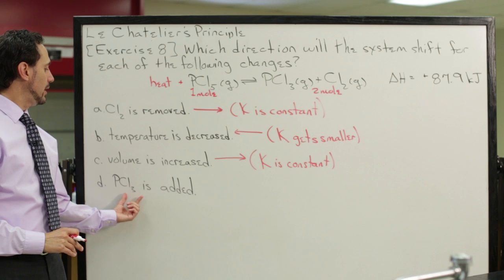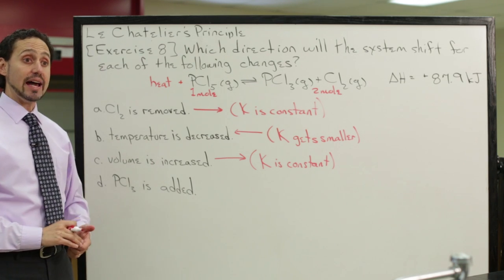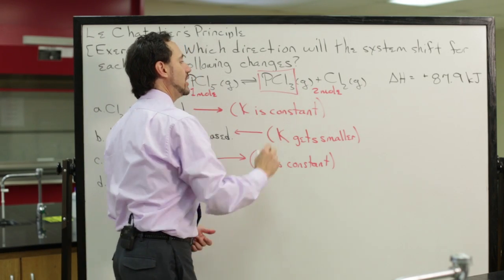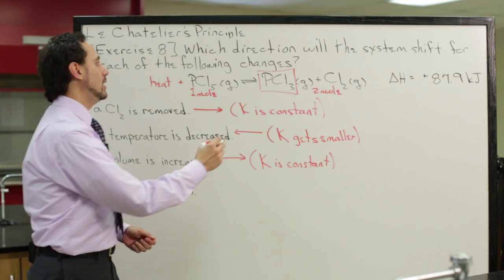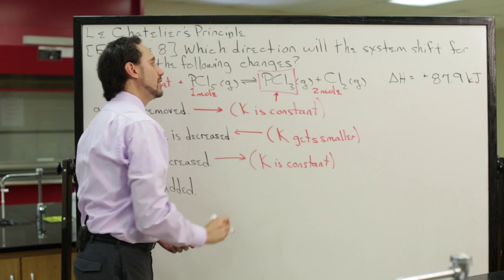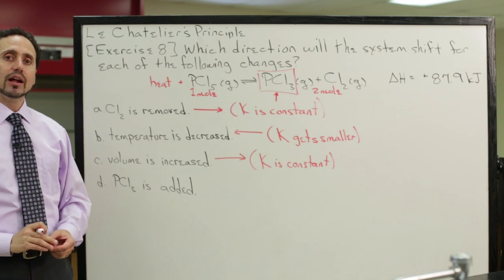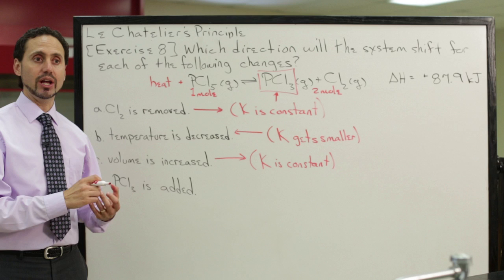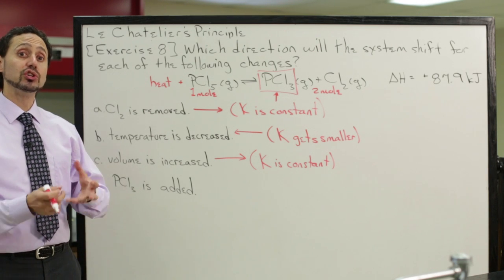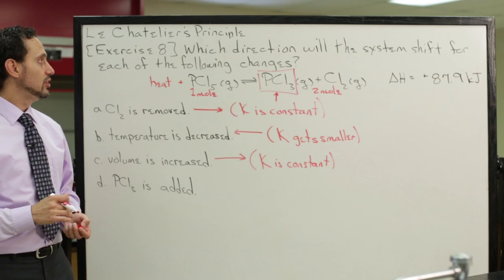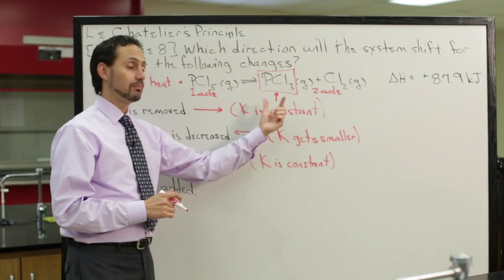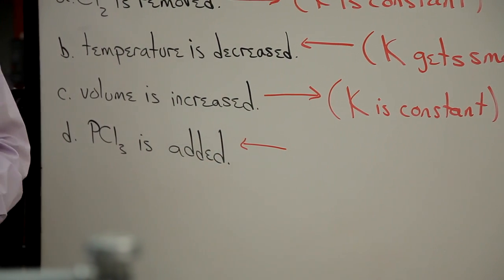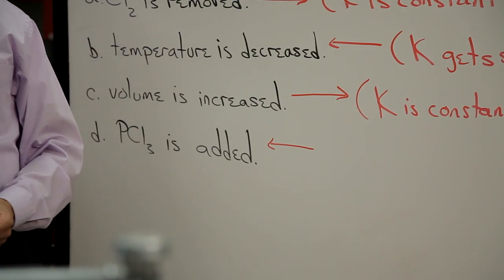In this fourth example, PCL3 is added to the system. We're increasing that. If we're increasing the amount of PCL3, Le Chatelier's principle predicts that the system will shift to counteract that change. It will shift to reduce PCL3. It can reduce PCL3 by using it up, so it will shift to the left to use up some of that PCL3.